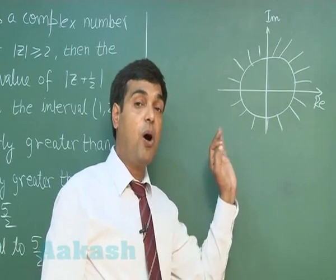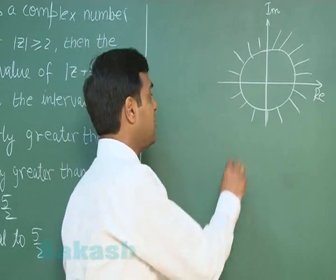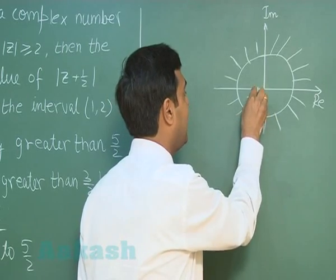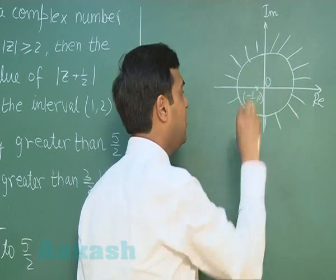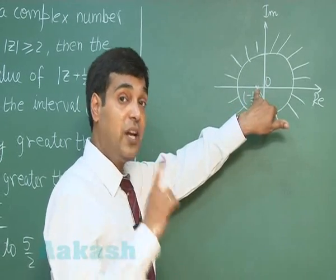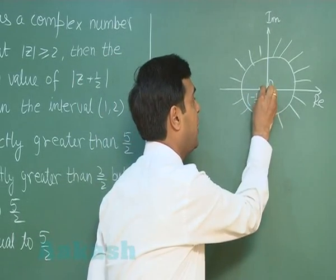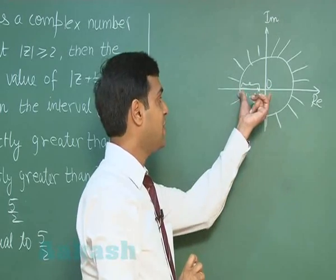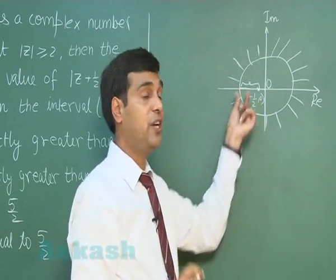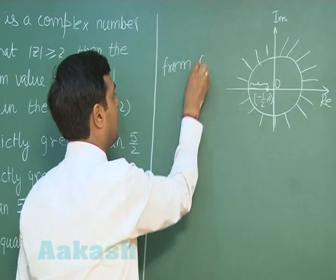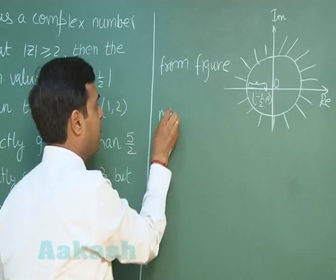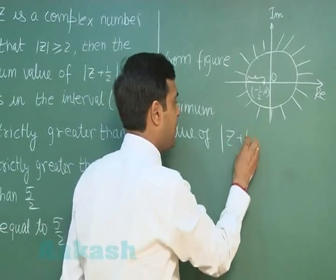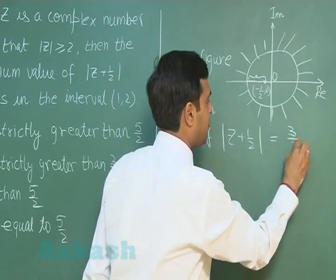We need to find the minimum value of |z + 1/2|, which is the distance of point z from the point (-1/2, 0). For the minimum, the point will lie on the line joining (-1/2, 0) with the center (origin). The minimum distance is along this line: the radius is 2, the distance from center to (-1/2, 0) is 1/2, so the remaining length is 2 - 1/2 = 3/2. Therefore, the minimum value of |z + 1/2| is 3/2.